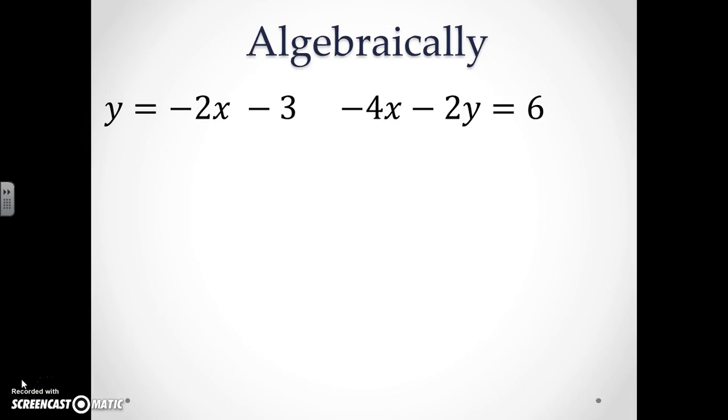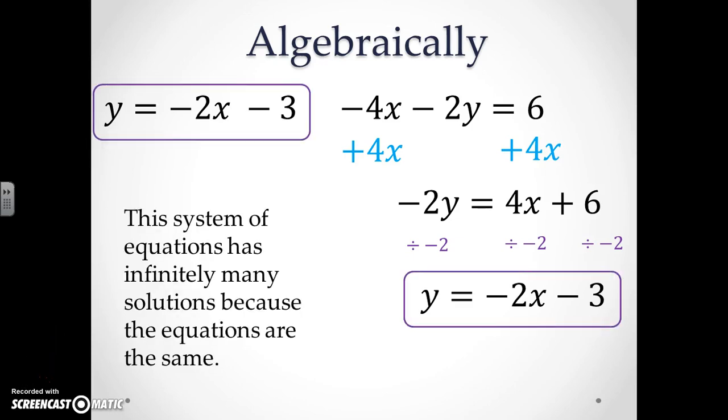Now we're going to look at an algebraic approach. Here we have two different equations, so one way we can go about solving this is to set both equations equal to y. For the second equation, we have negative 4x on the left hand side. So in order to bring it to the other side, we must add 4x to both sides so we get the equation negative 2y equals 4x plus 6. In order to get rid of the negative 2, we must divide both sides by negative 2, so we get the equation y equals negative 2x minus 3. If you notice, both equations are exactly the same. Therefore this system will have infinitely many solutions due to the fact that they will intersect at every single point.